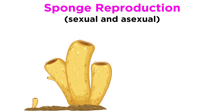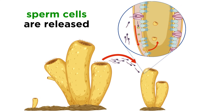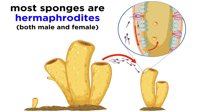Speaking of larvae or baby sponges, let's talk about sponge reproduction. The most common form of reproduction in sponges is sexual. They release sperm cells into the water; in some species eggs are also released into the water, while in others they are held within the bodies of the sponge, waiting to be fertilized by sperm from a different organism of the same species. It's important to note that while most sponges are hermaphrodites — that is, male and female at the same time — they don't have gonads or reproductive organs; sperm and eggs are produced by individual cells.